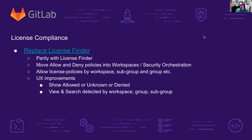For license compliance, we need to replace license finder because it is not well maintained and not great. Whatever we replace it with needs to have parity with license finder as far as functionality, languages, package managers, etc. The next thing I want to do, as soon as workspaces is ready — hopefully in a couple releases — is to move our allow and deny policies into workspaces and security orchestration, if Sam White and his engineers have not already done that. If they have, great. If not, then we will do that.